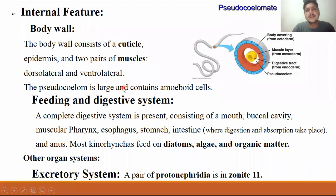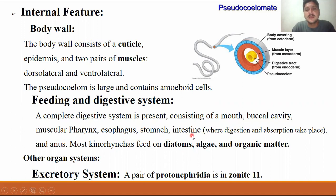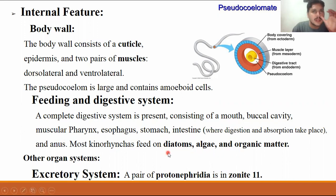The digestive system is complete, consisting of: mouth, buccal cavity, muscular pharynx, esophagus, stomach, and intestine. Absorption of food material occurs, and waste is released. Their diet includes diatoms, algae, and other organic material, which belong to the protist kingdom and other organic groups.